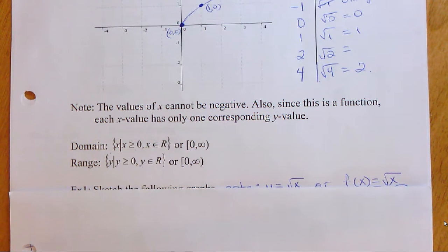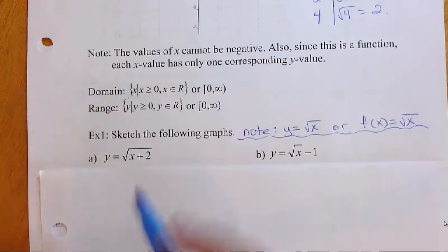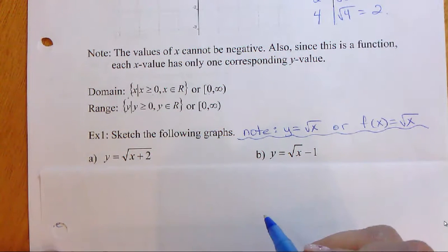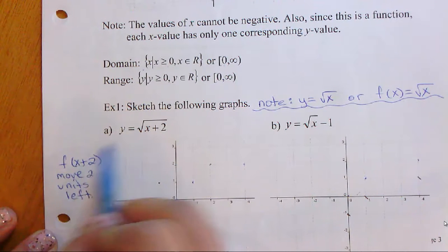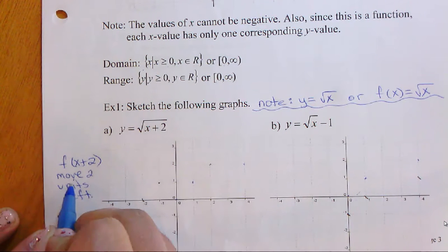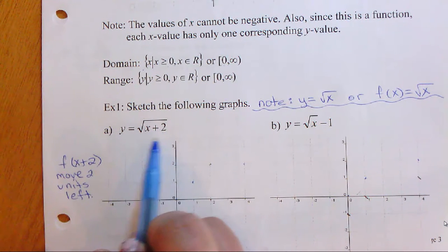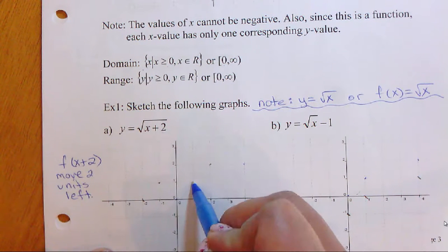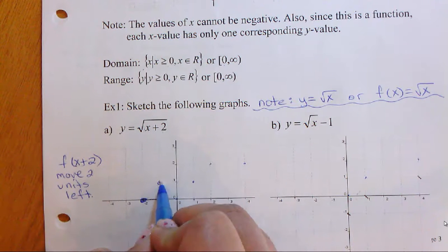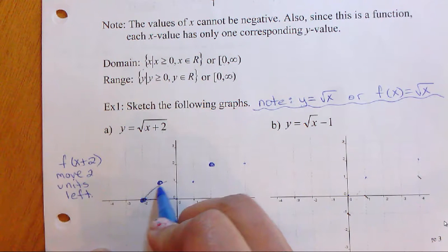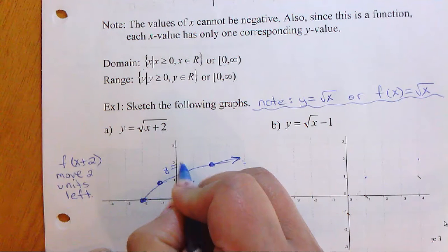The next example: we're going to sketch the following graphs. It's important to be familiar with your parent function. Notice how f(x) has changed — originally we had f(x), and now it's become f(x+2). The change is underneath the root sign, so we move two units to the left. Each of the original points — (0,0), (1,1), (4,2) — moves left two, giving us y equals square root of (x + 2).